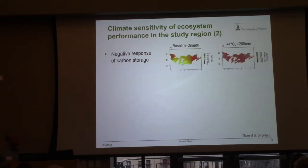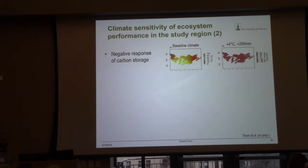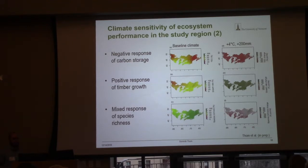If we disentangle that a little further, we can see that the responses are quite different across these indicators. Under current climatic conditions, total ecosystem carbon is quite high in the central south, but overall the decrease in total ecosystem carbon is quite similar across the entire region under changed climatic conditions. For timber, we see the opposite effect — as many other studies also predict, growth rates increase across the entire region. For species richness, the response is not quite clear — we have some regions that are red. This actually reflects the overall picture when we take them all together; they're kind of canceling each other out.